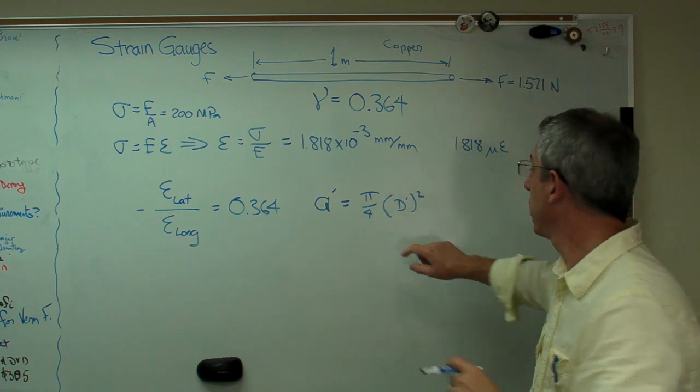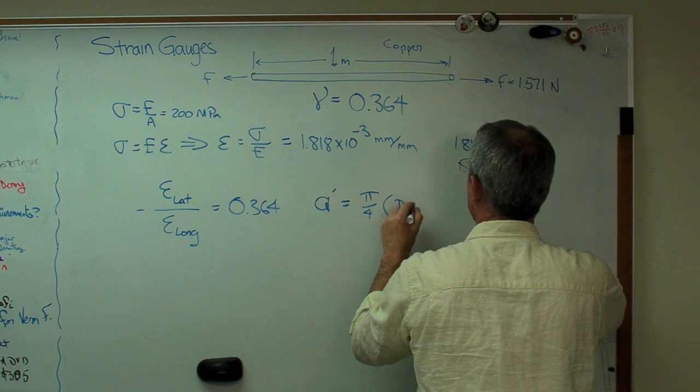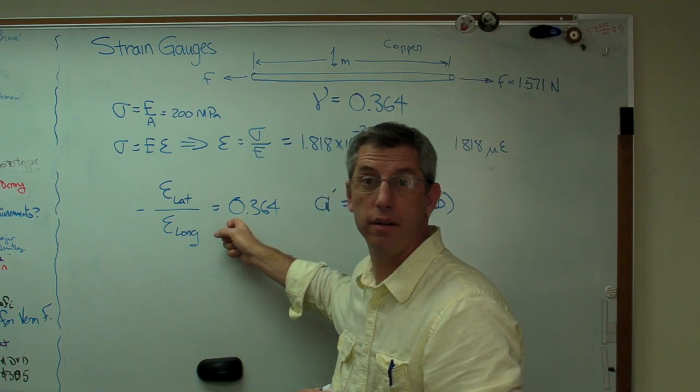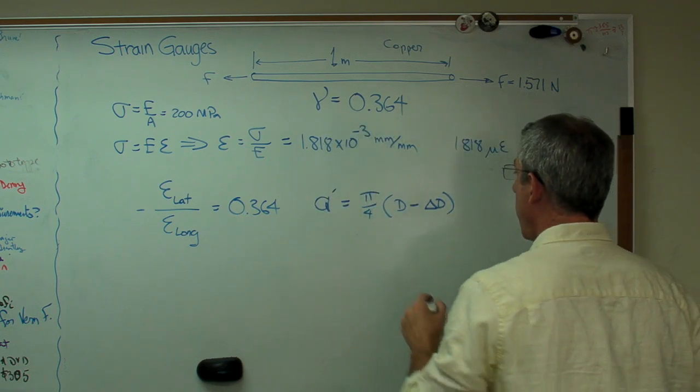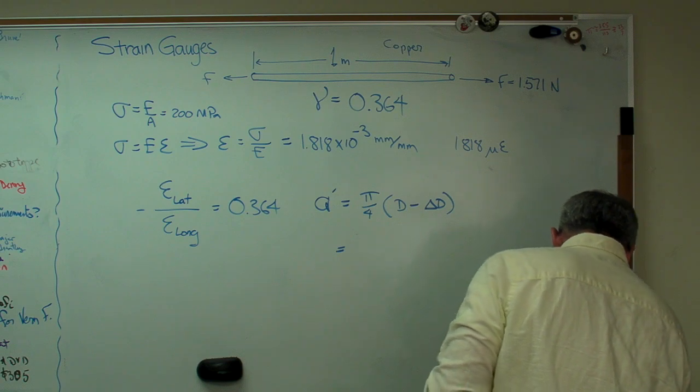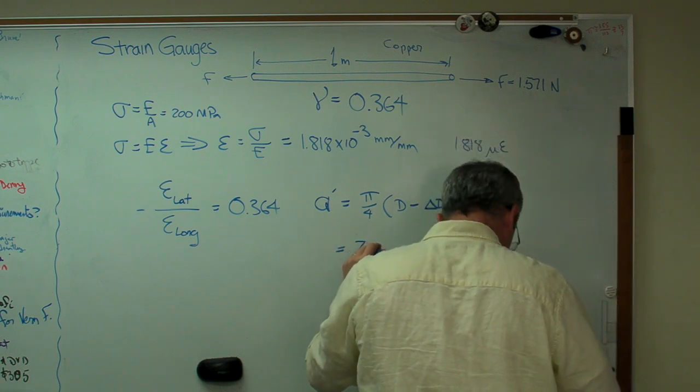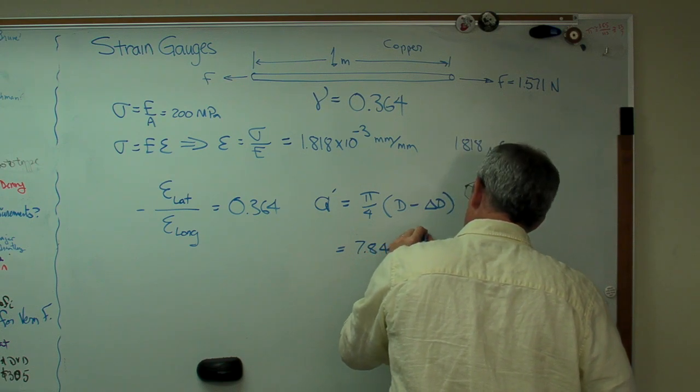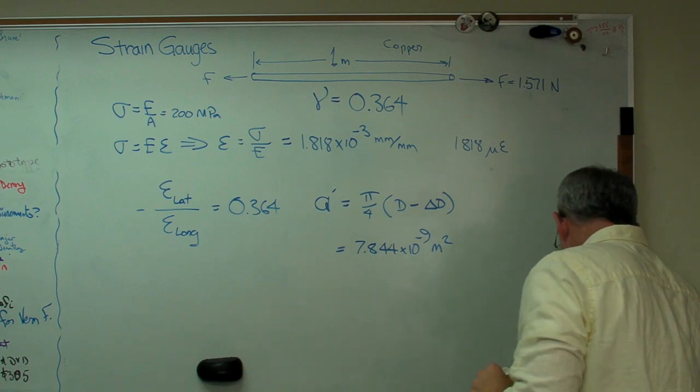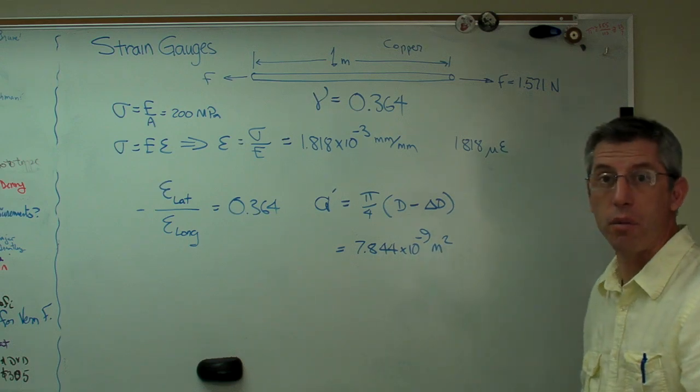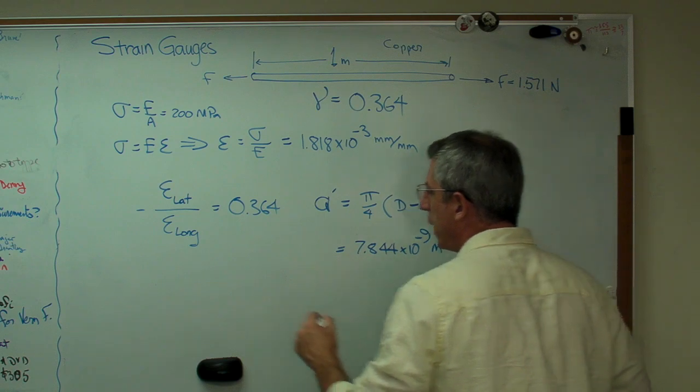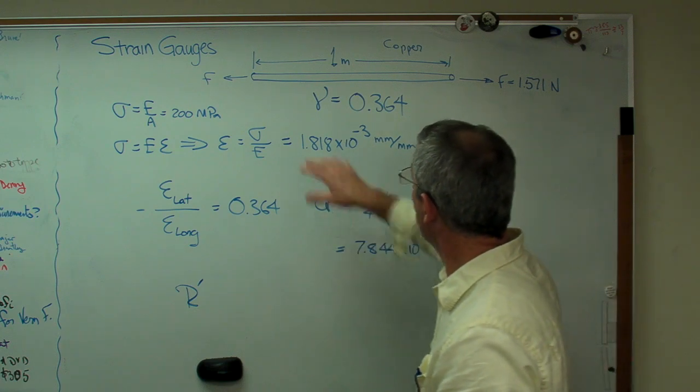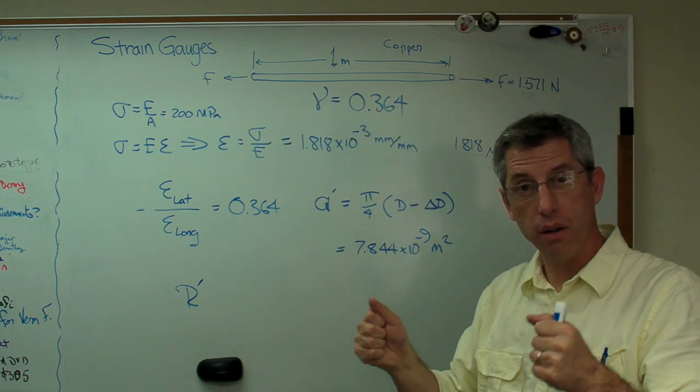So, that my new area, and I'll call that area prime, equals π over 4 times my new diameter squared. Let's actually write this a different way. Diameter minus delta diameter. And the delta times the diameter is given by that. When I do that, I get another number here. And that's 7.844 times 10 to the minus 9 meters squared. And if you remember, I had 7.854 before. So, it's gone down just a little bit.